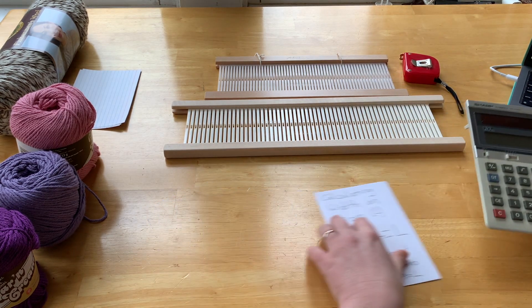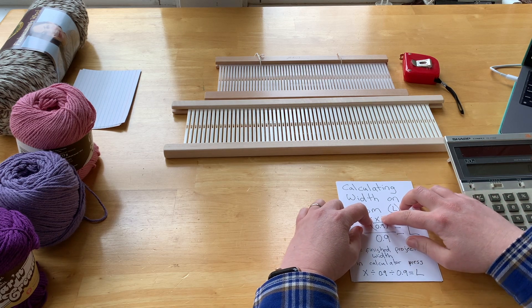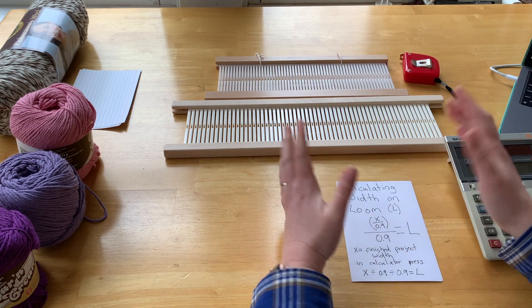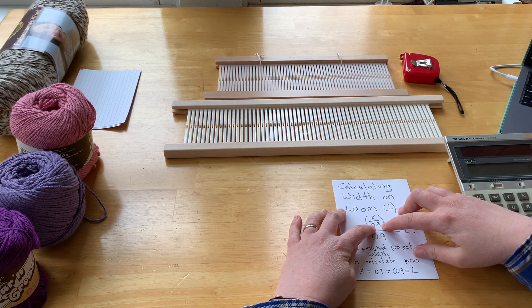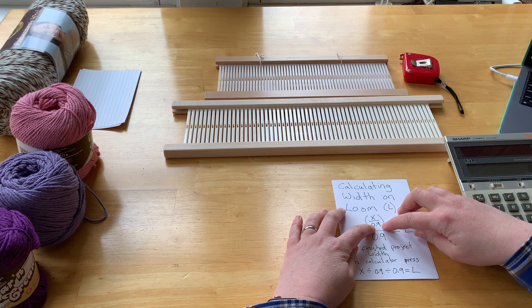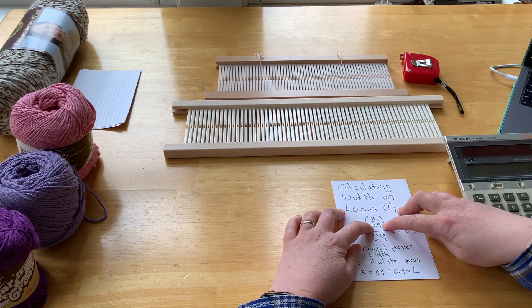So that's where this is: X is the final amount I want the project to be width-wise, divided by 0.9. Then you take whatever number you get from that and you divide it again by 0.9 to account for how much draw-in you're going to have on the loom.